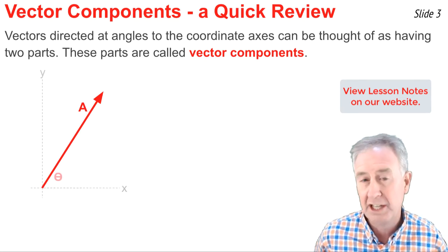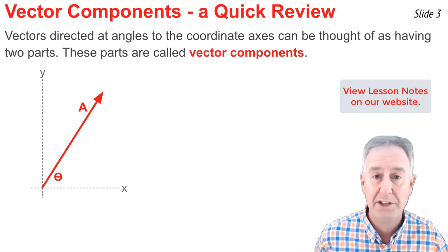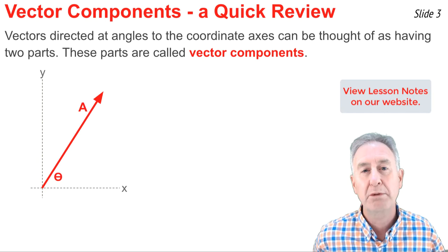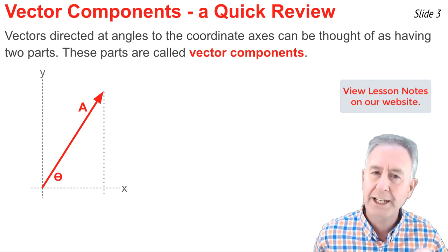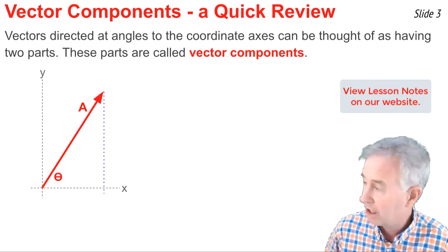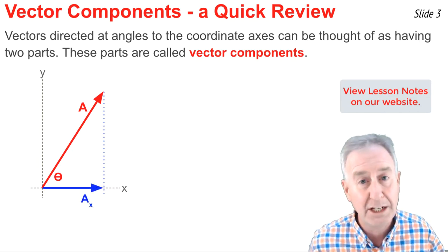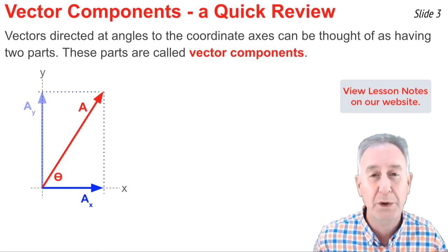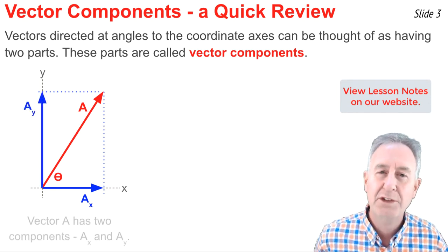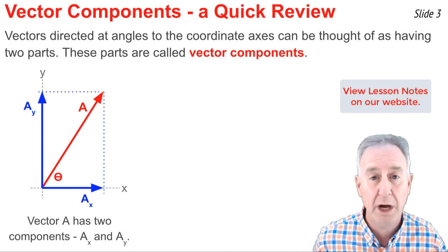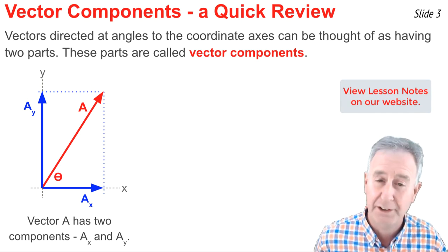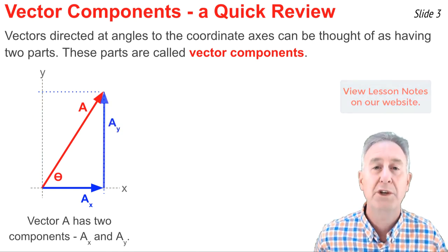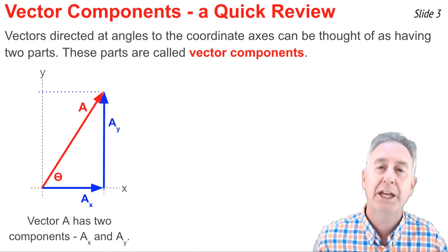So this vector here is at some angle theta to the horizontal and vertical axes. And if we wish to find the components of this vector, we simply project it onto the axes. Projecting it onto the horizontal axis shows us where the Ax or horizontal component lies, and projecting it onto the Y axis shows where the vertical component lies. These two vectors in blue are what we call Ax and Ay, the components of vector A. It's often handy to take the Ay vector and move it over so that it's part of a right triangle.